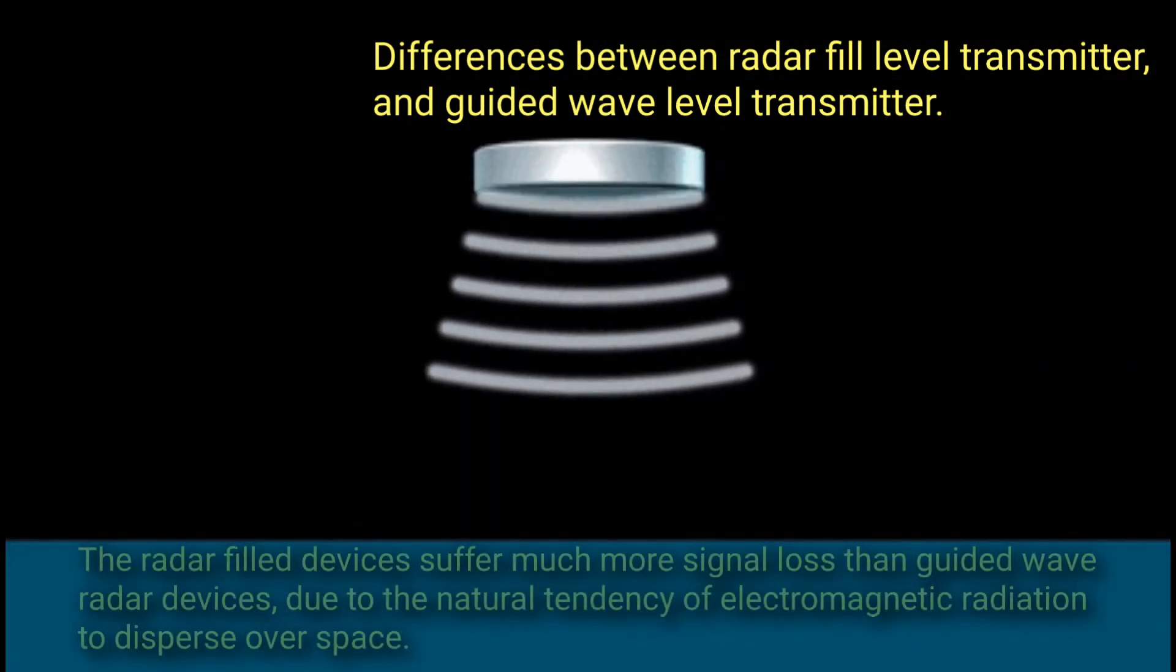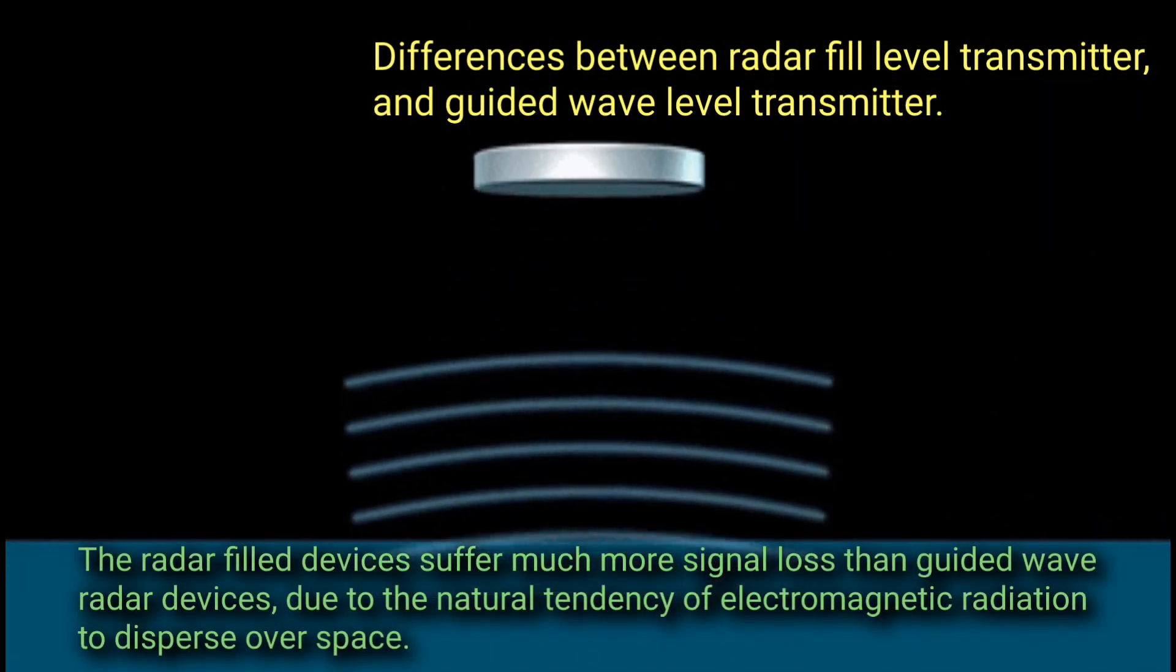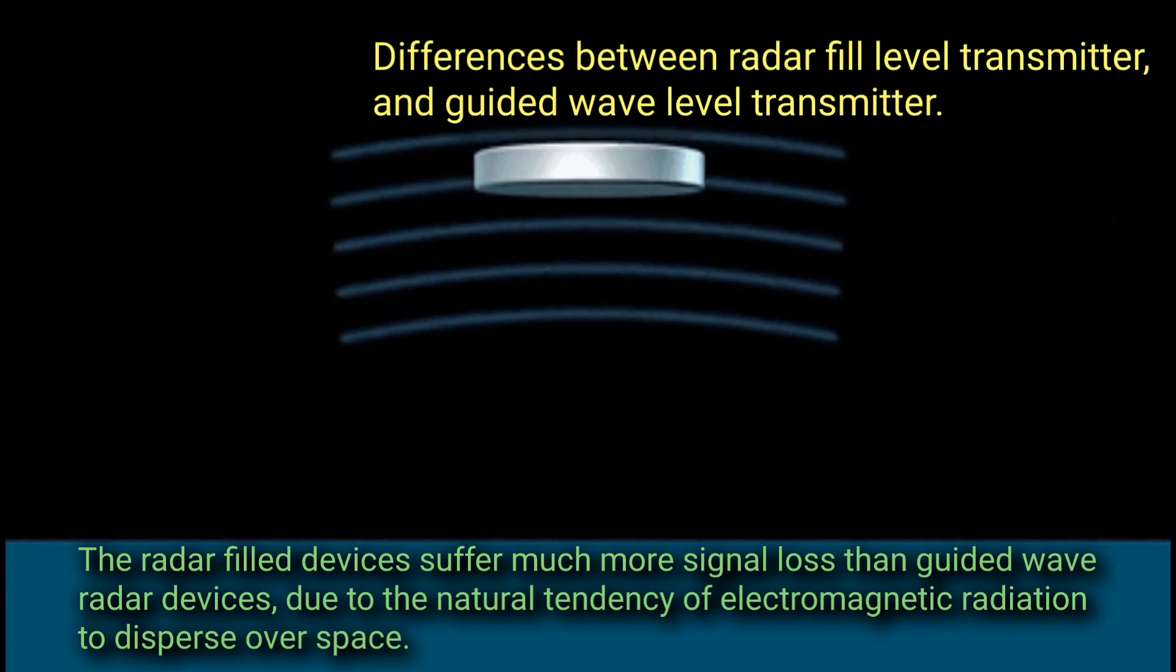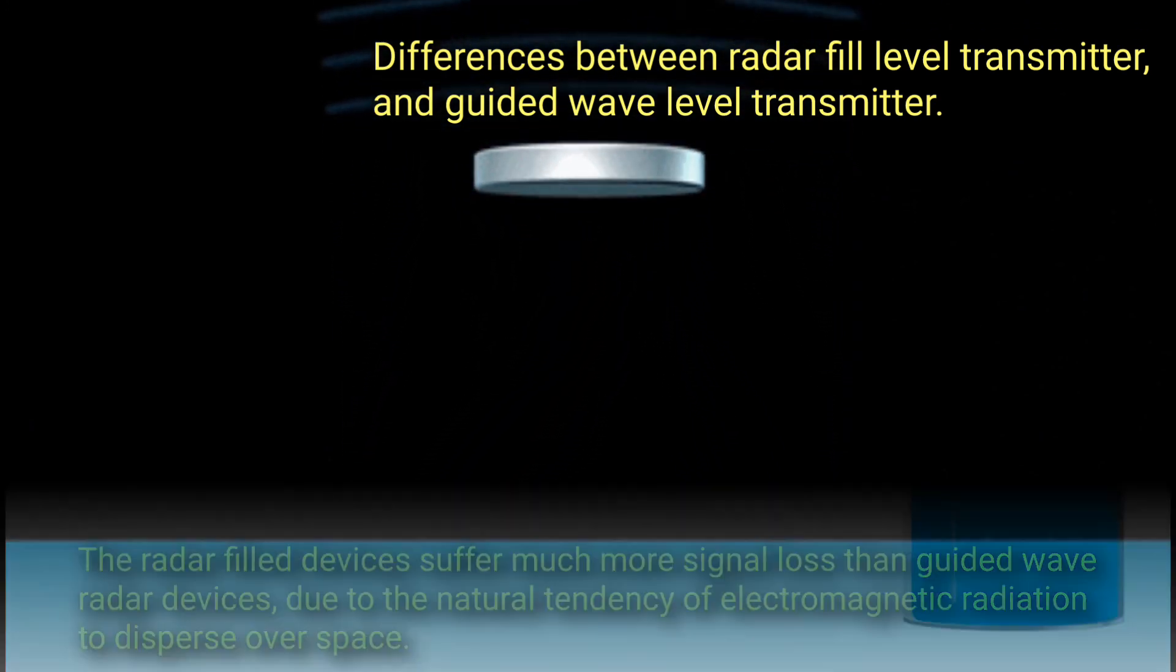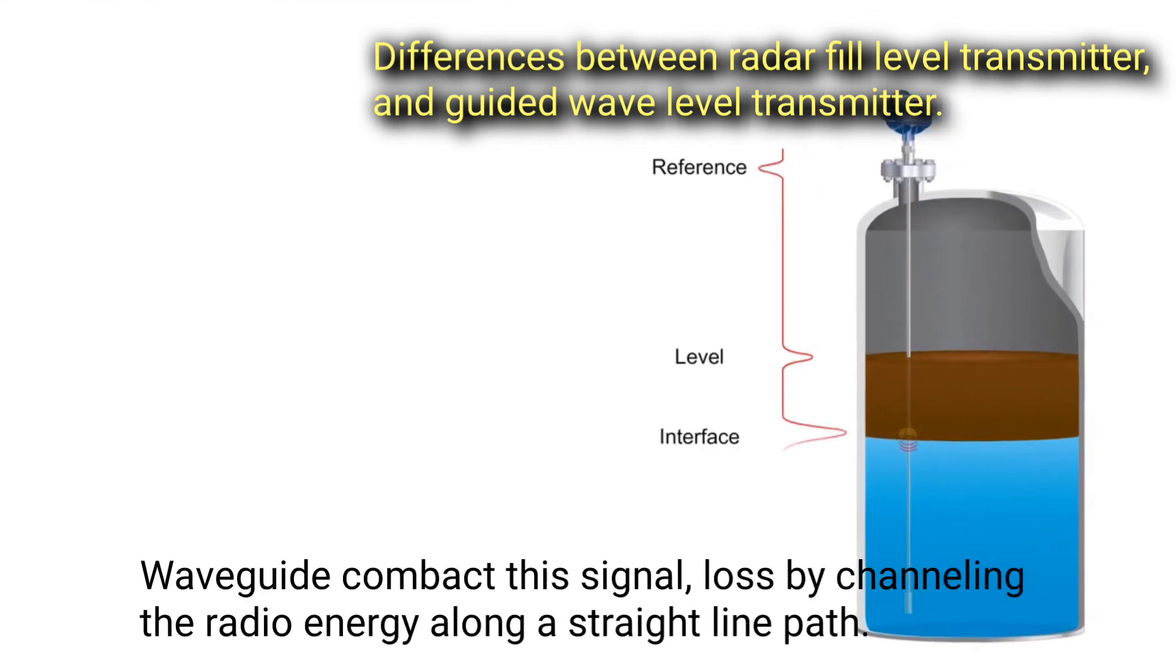The radar fill device suffers much more signal loss than guided wave radar devices due to the natural tendency of electromagnetic radiation to disperse over space. Waveguides combat this signal loss by channeling the radio energy along a straight line path.